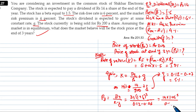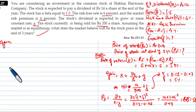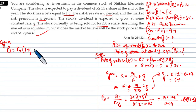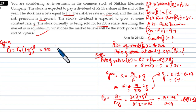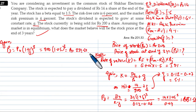So the answer is: P3 = P0 × (1 + g)^3 = 200 × (1.05)^3, which is equal to approximately Rs. 231.53. That is the stock price at the end of year 3.